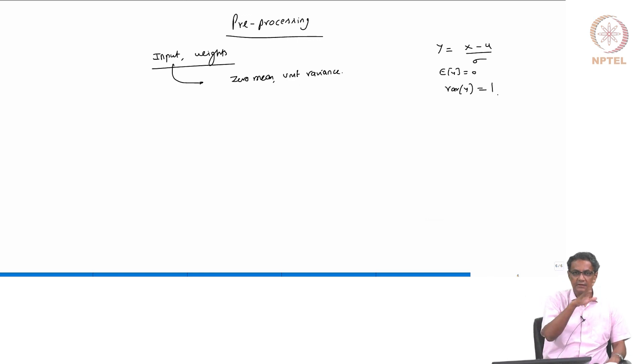So, that is a distribution, that is like a domain change. That is what we call that, domain change problem. Here, this is something similar, but then it is happening internally. That is why that is called an internal covariate shift, and in order to address this issue, what is done is there is something called batch normalization.